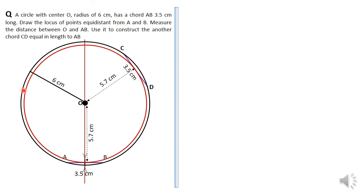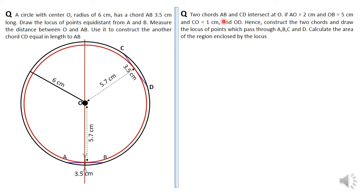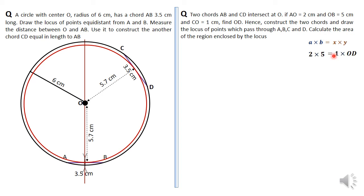Now, two chords AB and CD intersect at O. If AO is 2 centimeters, OB is 5 centimeters, and CO is 1 centimeter, find OD. Using the intersecting chords theorem, AO times OB equals CO times OD. So 2 times 5 equals 1 times OD, giving OD equals 10 centimeters. Therefore chord AB is 2 + 5 = 7 centimeters, and chord CD is 1 + 10 = 11 centimeters. The chords are constructed intersecting such that AO = 2, OB = 5, CO = 1, and OD = 10.